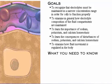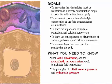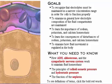Here's what you need to know: how ADH, aldosterone, and the sympathetic nervous system work to maintain fluid homeostasis; the principles of colloid osmotic pressure and hydrostatic pressure; and the function of the nephron. To see definitions of terms, click the bold red words.